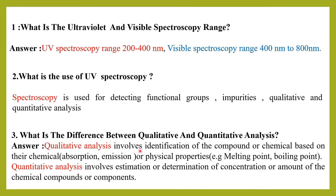Coming to the next question: what is the difference between qualitative and quantitative analysis? Qualitative analysis involves the identification of a compound or chemical based on their chemical or physical properties — such as absorption, emission, melting point, or boiling point. Quantitative analysis, as the name indicates, involves the determination of the concentration or amount of a chemical compound or its components.